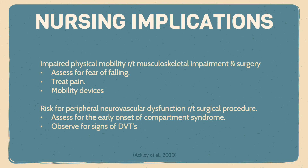I've highlighted here two priority nursing diagnoses and their interventions. First, impaired physical mobility related to musculoskeletal impairment and surgery. Interventions for this diagnosis may include: assess for fear of falling prior to physical activity, assess pain and treat it, and provide and teach use of mobility devices.